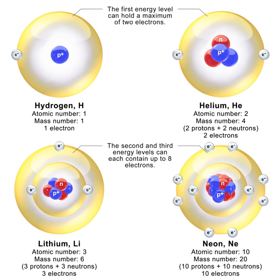Three types of beta decay in competition are illustrated by the single isotope copper-64, which has a half-life of about 12.7 hours. This isotope has one unpaired proton and one unpaired neutron, so either the proton or the neutron can decay. This particular nuclide is almost equally likely to undergo proton decay by positron emission (18%) or by electron capture (43%), or neutron decay by electron emission (39%).